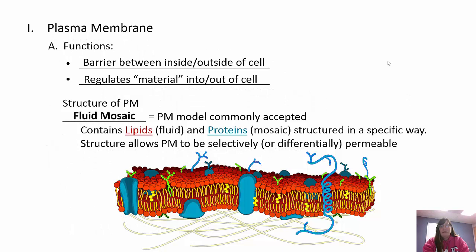First and foremost, the plasma membrane - remember it goes around the entire cell. Its function is twofold: it is a barrier between the inside and the outside of the cell, separating the internal from the external, and it regulates material that comes in and out. It's what we call selectively permeable, meaning it only lets certain things in and out of the cell.